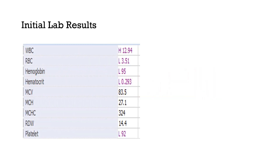Lab results show hemoglobin 9.5 g/dL. The main abnormal finding is platelet count decreased to 92, which commonly occurs in ECMO due to consumption of platelets in the tubes, oxygenator, and extracorporeal circuit — platelet destruction is common in ECMO patients.